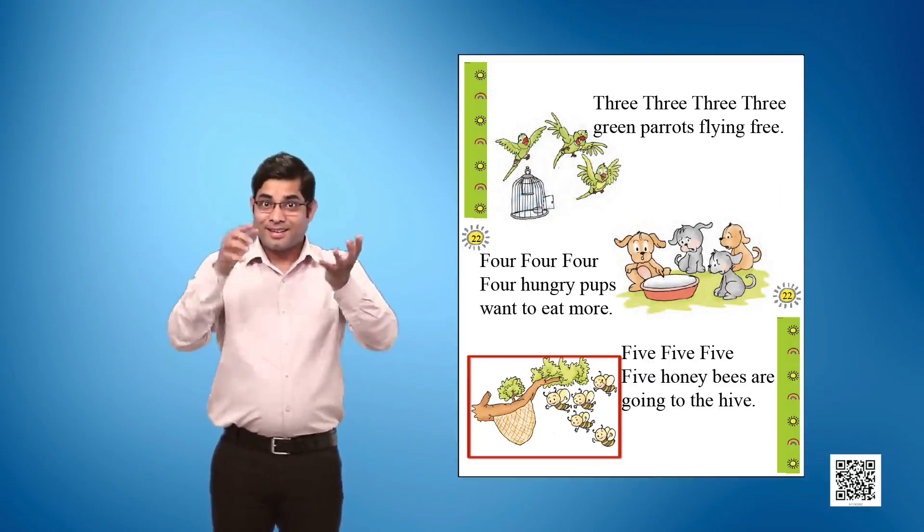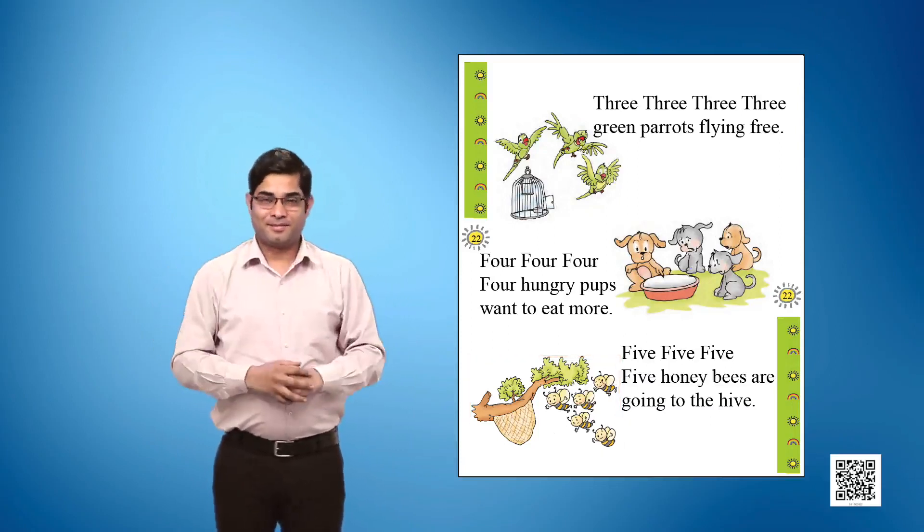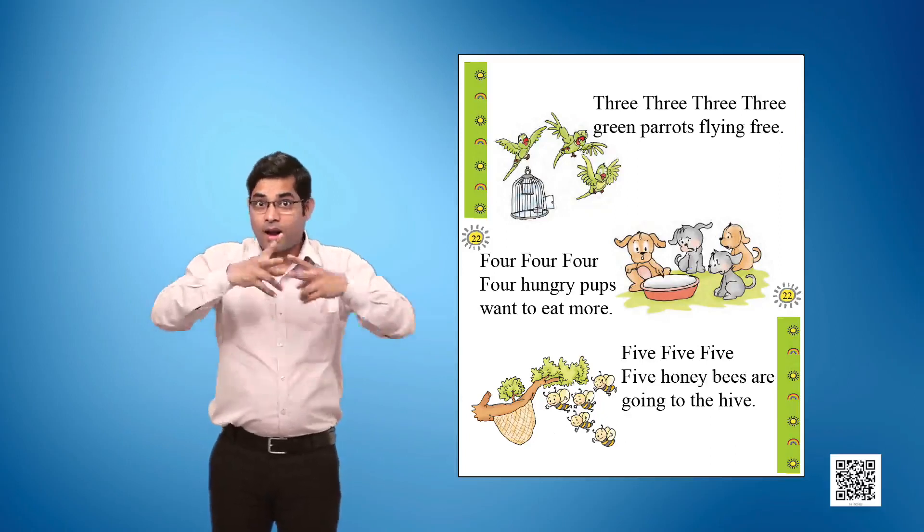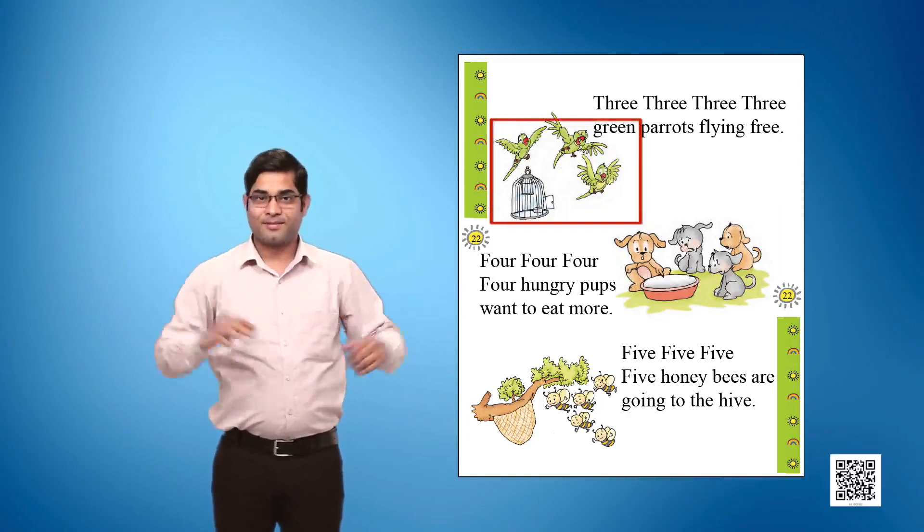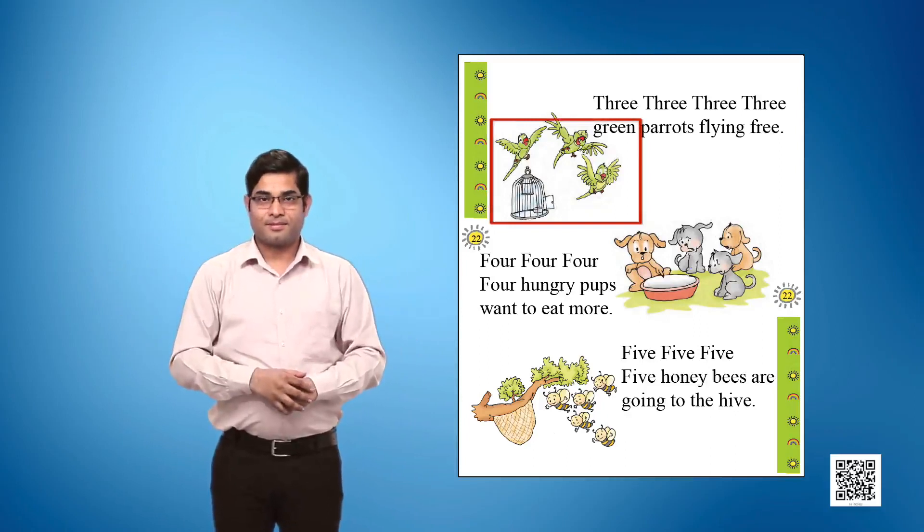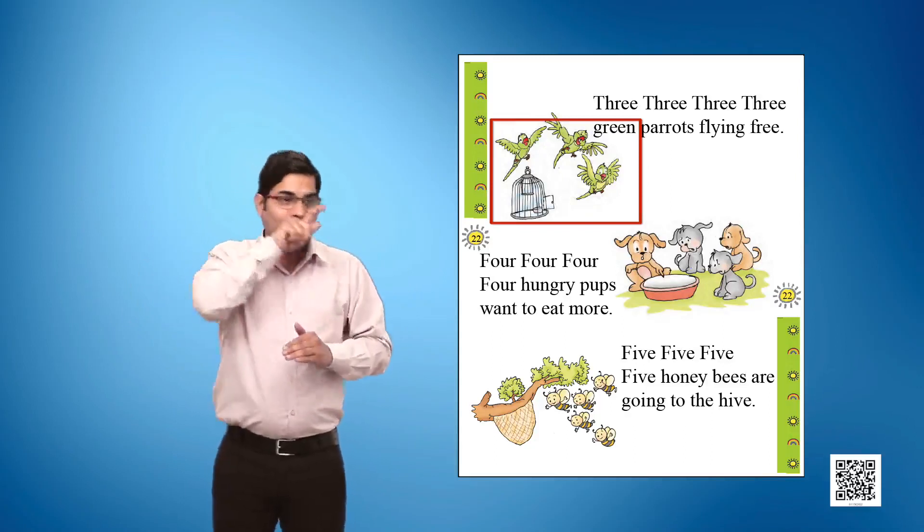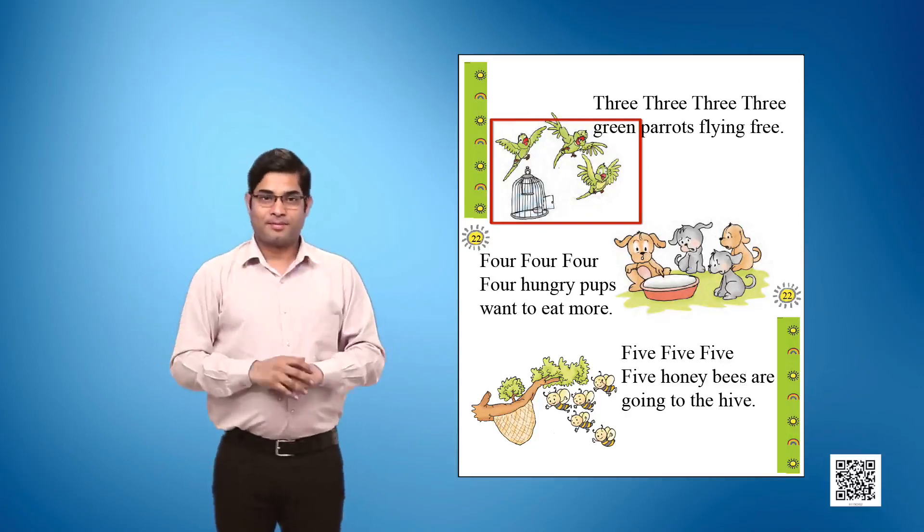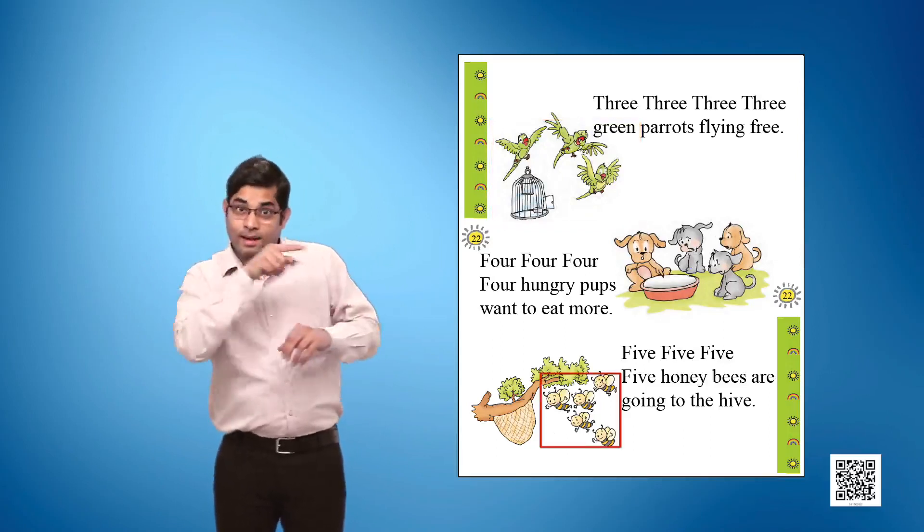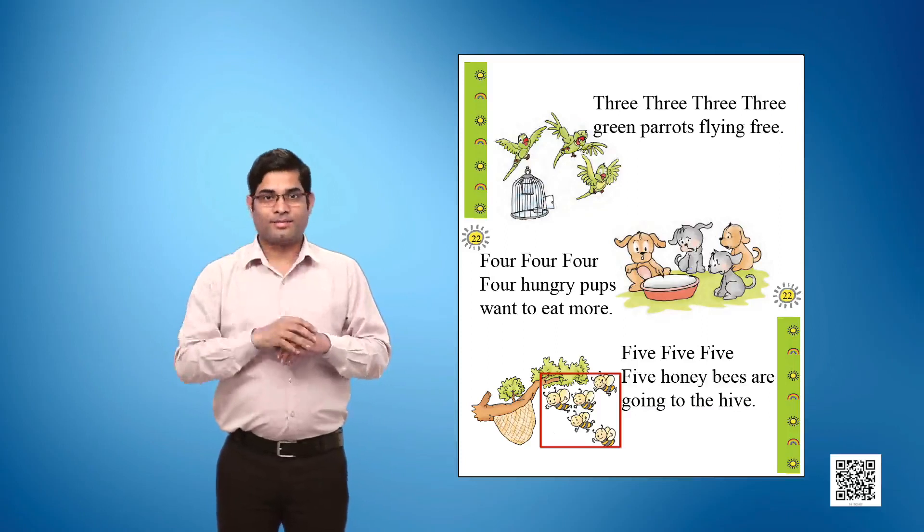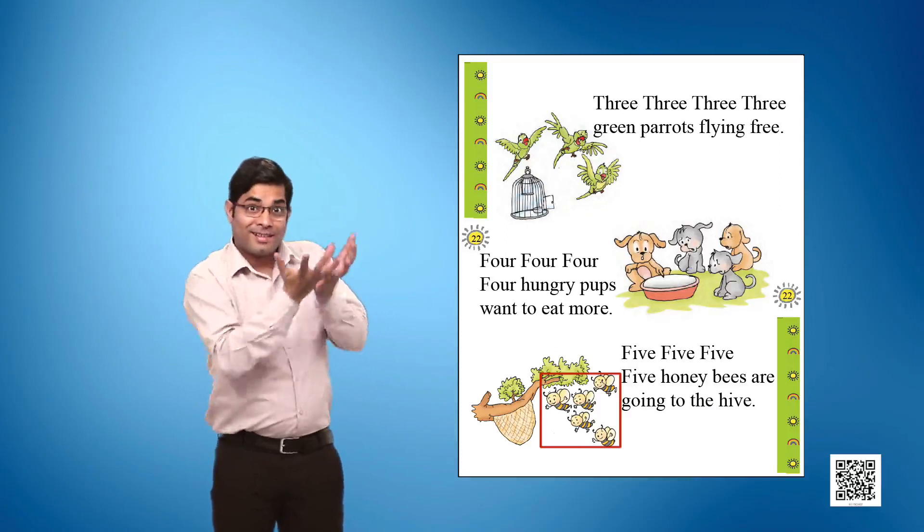Animal 1: Parrot is a small bird that speaks. Animal 2: Bees are small insects that fly and give honey.